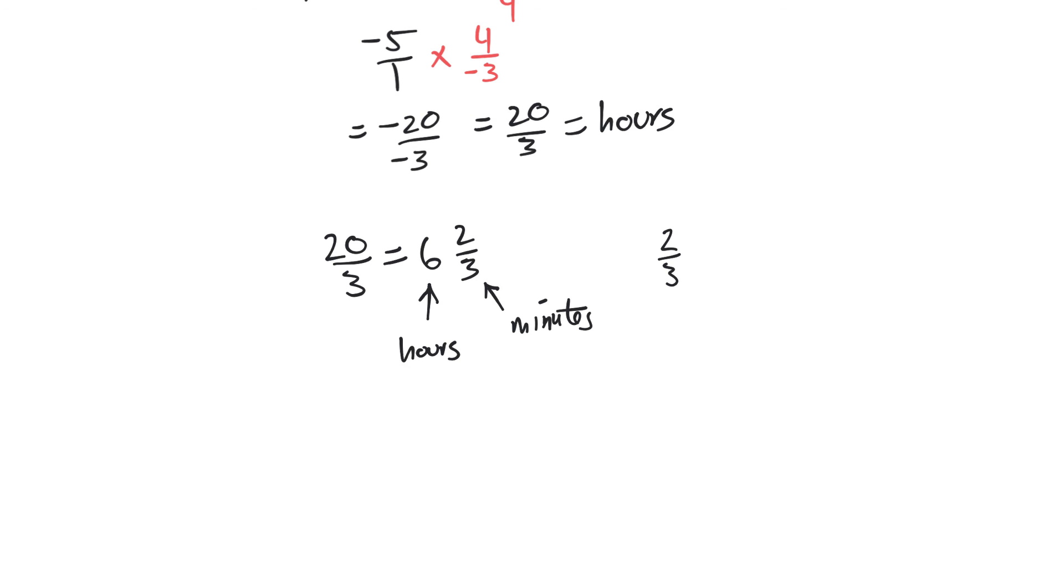So that would be times, there's 60 minutes in an hour, so that would be 120 over three, which is 40 minutes. Our final answer would be six hours and 40 minutes.